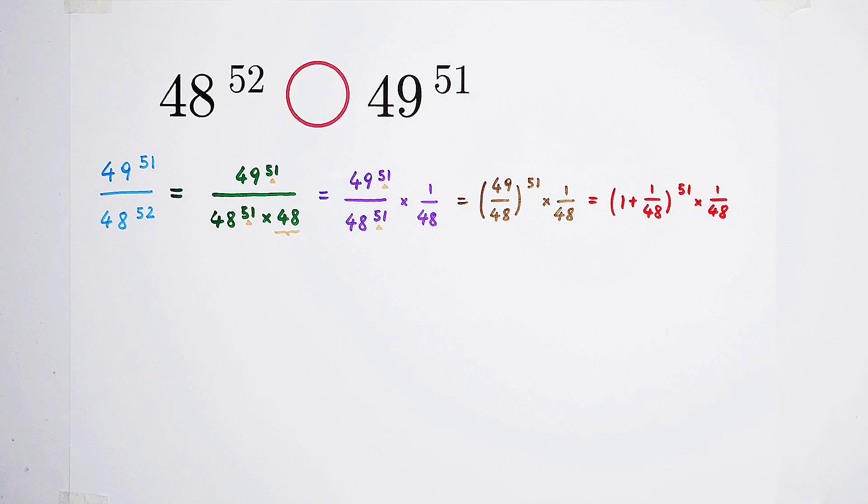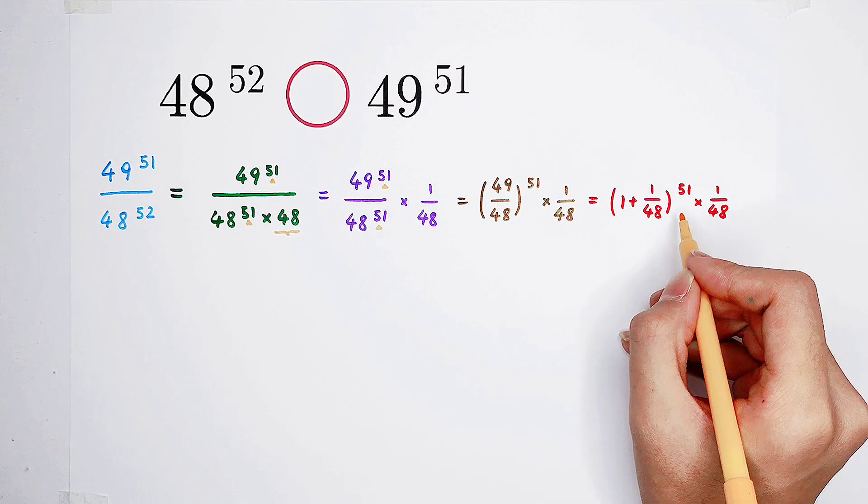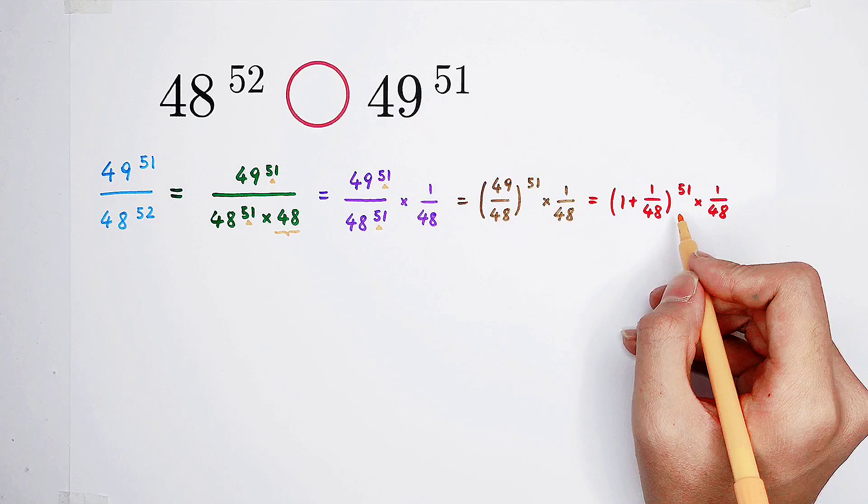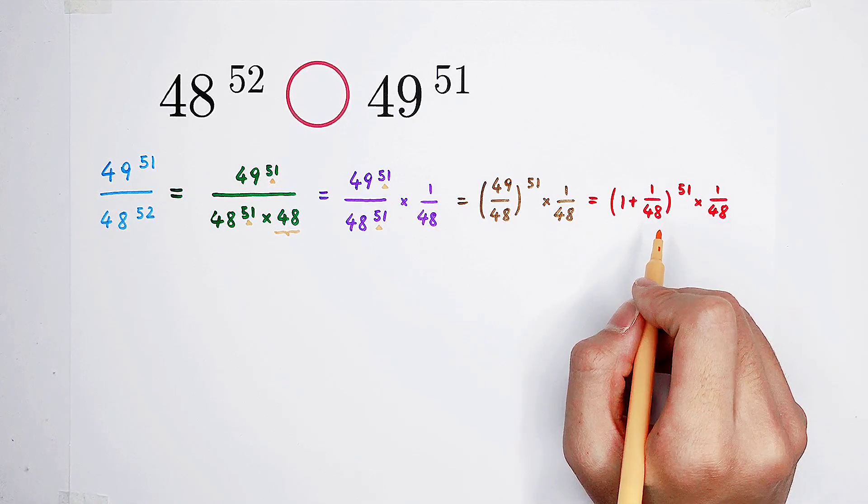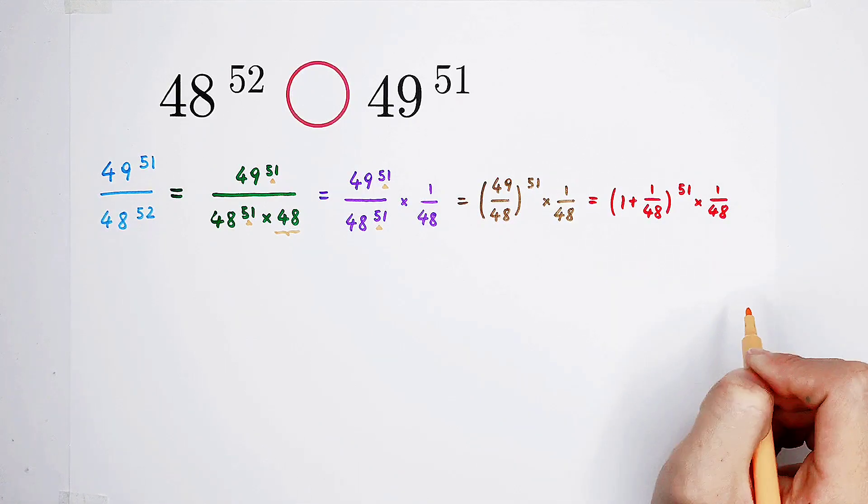Very good. Then what shall we do? Of course, on the base, we have 1 plus 1 over 48. On the exponent, we have 51. Hmm, this 51 is close to 48. However, it is not a nice number. Very unlucky. So what shall we do?